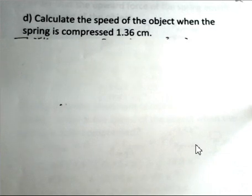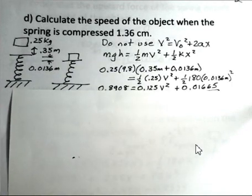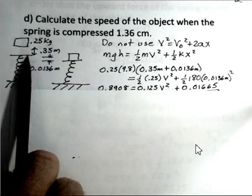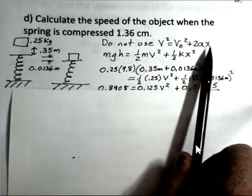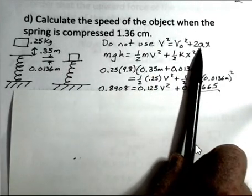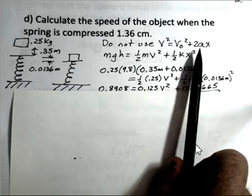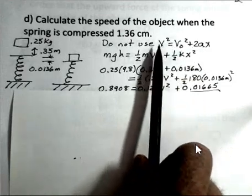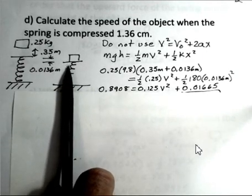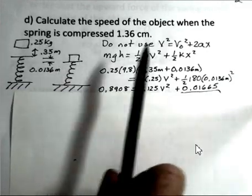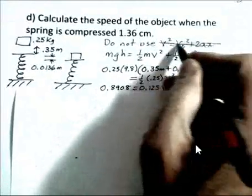I want to calculate what's the speed of the object when the spring is compressed 1.36 centimeters, that equilibrium position. What is the speed when we get down to the place where the force of the spring equals the weight of the object? Can I use v squared equals v naught squared plus 2ax? We're trying to calculate a speed. The problem is the acceleration is not constant when we're in contact with the spring. When we're in contact with the spring, the force of the spring is variable. So the acceleration of the object is variable, and this equation is illegal.